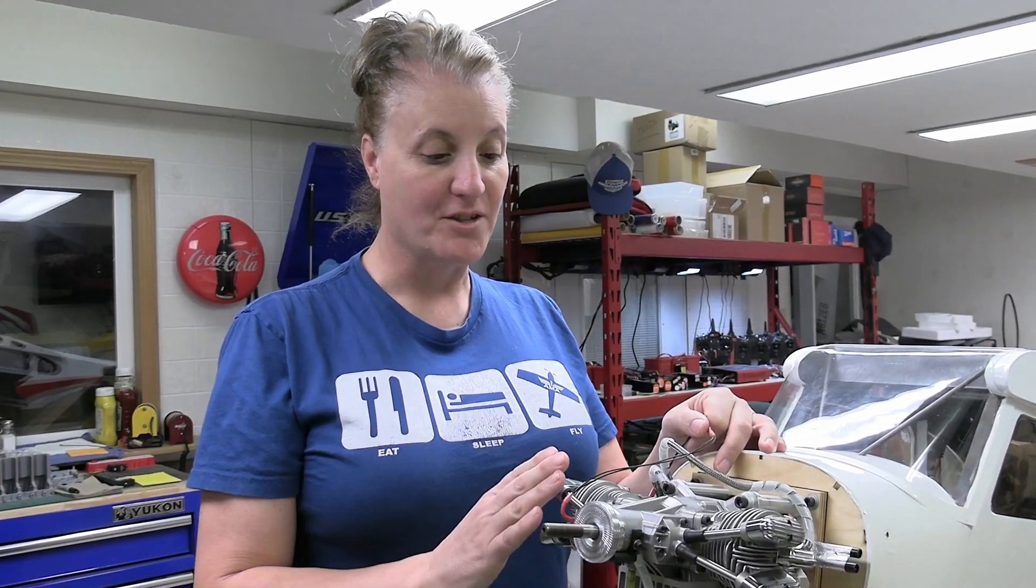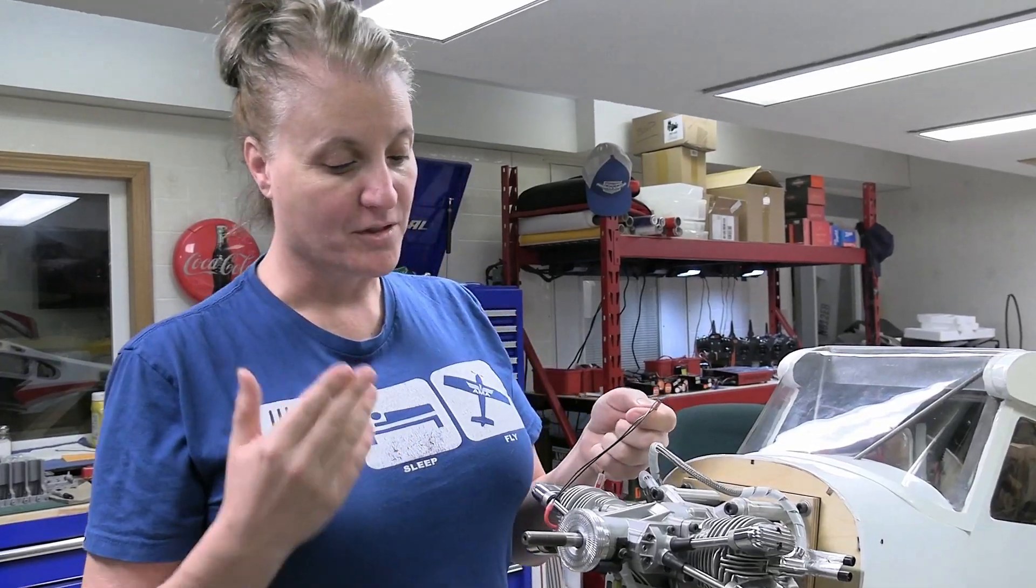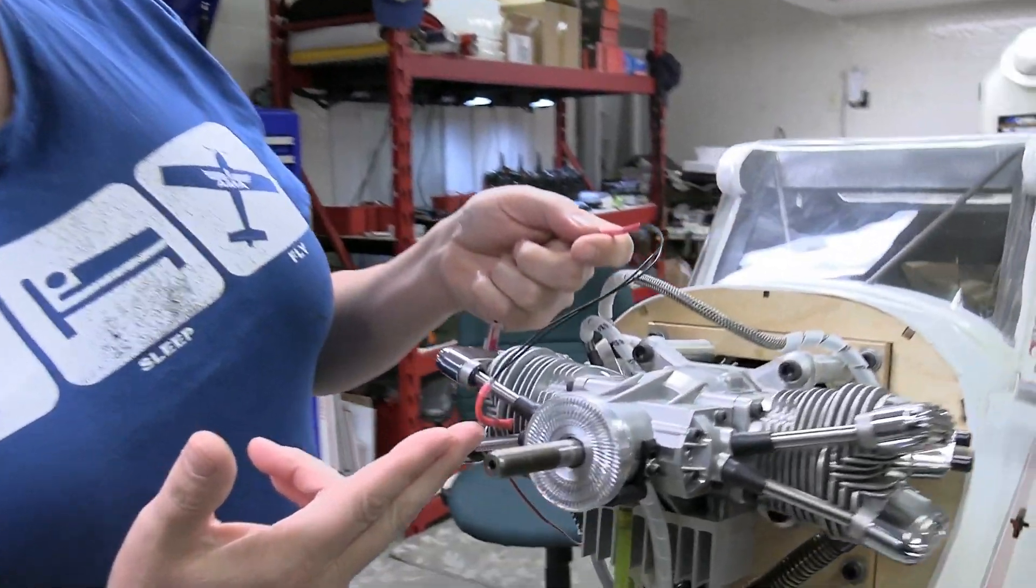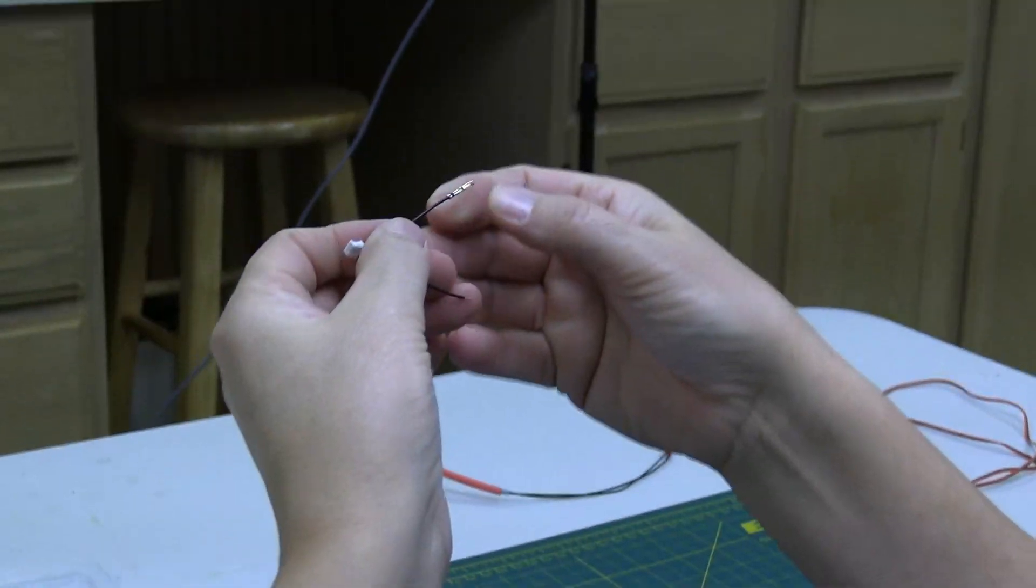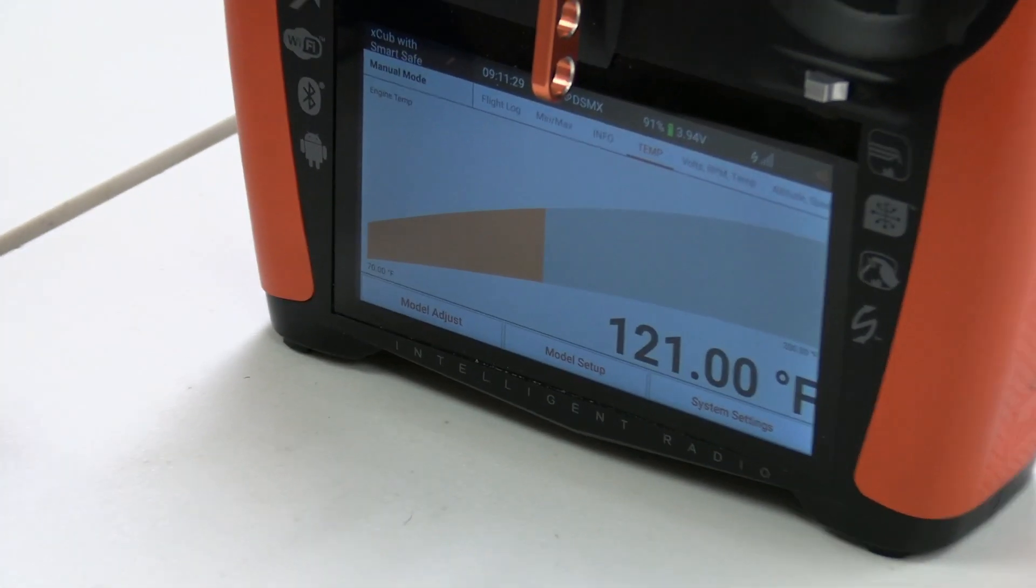Hey pilots, if you're like me you want to know the temperature of your engine cylinders for your fuel power plates. In today's video I'm going to install the Spectrum temperature sensor, which is a thermistor. I'm going to show you how to modify the cable and then set it up in the telemetry on your transmitter.